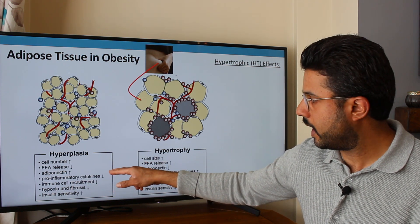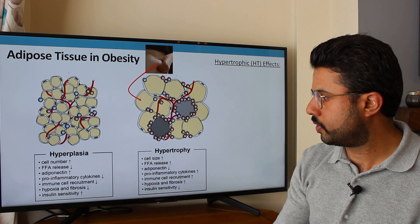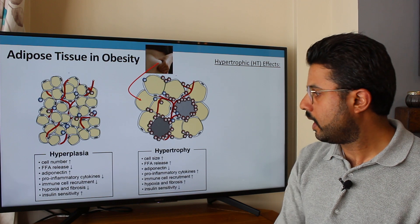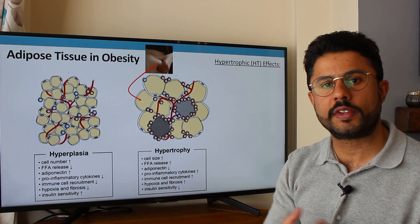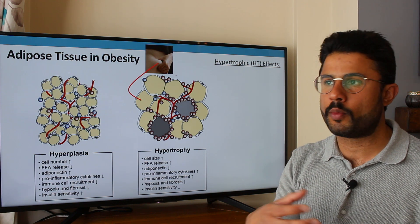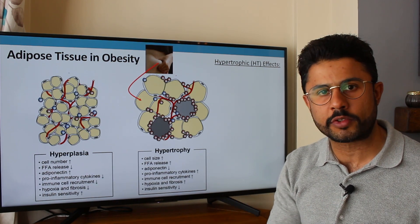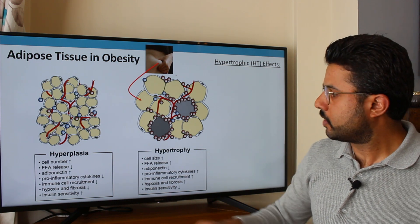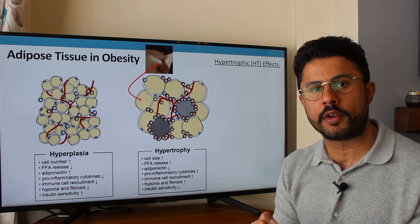In hyperplasia there is also a reduction in immune cell recruitment. Hypoxia — when a cell does not have enough oxygen and eventually dies — and fibrosis, which is scarring and severe damage to a tissue, are both reduced in hyperplasia. Insulin sensitivity is also increased. Insulin is the hormone released to get glucose out of the bloodstream into the liver and muscle, because excess blood glucose risks damage to blood vessels and is a risk factor for cardiovascular disease. Increased insulin sensitivity means cells respond well to insulin, efficiently clearing glucose from the blood.